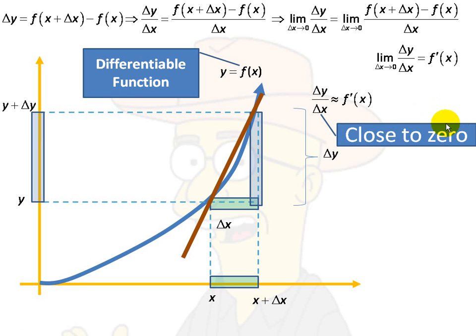What if delta x does not go to zero? What if it's just very close to zero? Well, we don't have the derivative, but we have approximately the derivative. So we're going to recognize this fact that as delta x gets closer and closer to zero, but doesn't get to zero, we get a better and better approximation of the derivative at x.